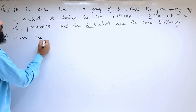Let us subtract. We write 1 as 1.000, taking three decimal places since we have three digits after the decimal. Subtracting 0.992: 10 minus 2 is 8, 9 minus 9 is 0, 9 minus 9 is 0, 0 minus 0 is 0. So the result is 0.008.